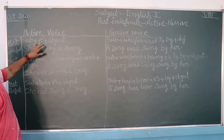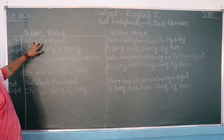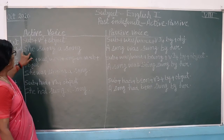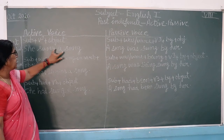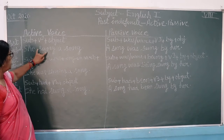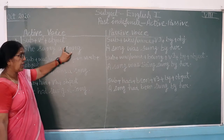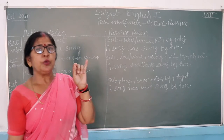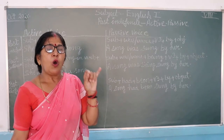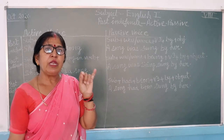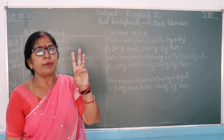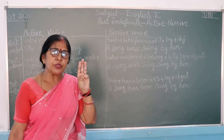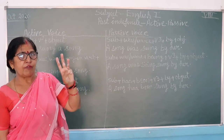Here, as you may know, the active voice uses: subject, second form of the verb, and object. For example: she sang a song. Always remember that when we use the passive voice, we will always put the third form of the verb. In the passive voice, we always use the third form of the verb.